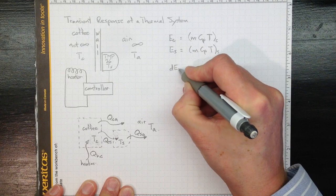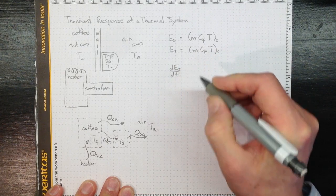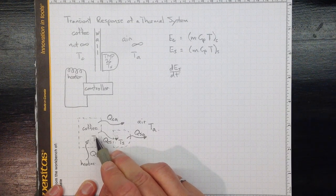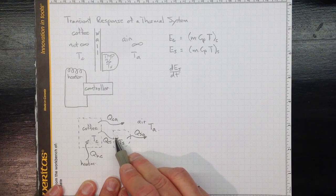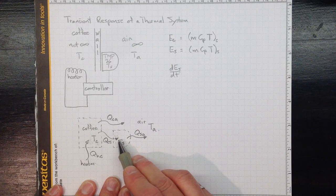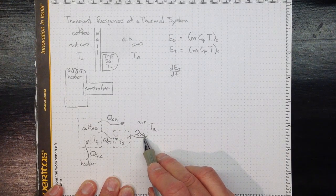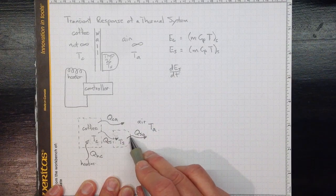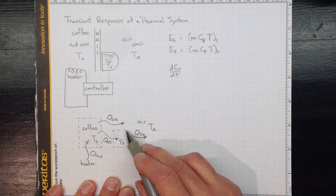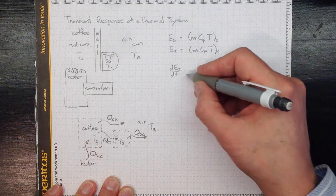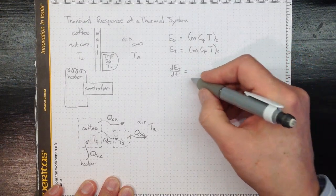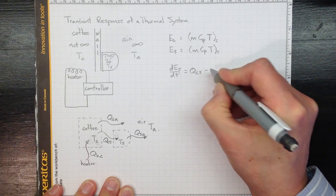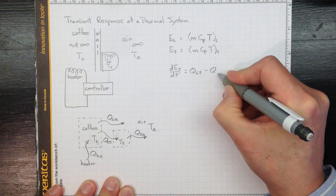The rate of change with time of the amount of energy in the sensor is just the energy coming into the sensor per unit time, that's QCS, the amount of energy per unit time, so this is in units of watts coming into the sensor minus what's going out of the sensor. So if there's more going out than coming in, the derivative will be negative. If there's more coming in than is going out, the derivative will be positive, the energy will go up, and correspondingly the temperature will go up. So it's just Q coming in from the coffee to the sensor minus Q going out from the sensor to the air.